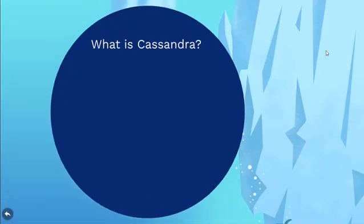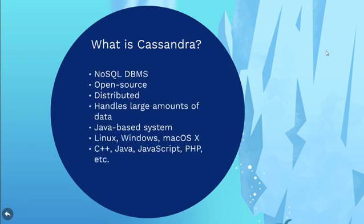Let us now see what exactly is Apache Cassandra. Cassandra is basically a free and open-source distributed wide-column store NoSQL database management system designed to handle large amounts of data across many commodity servers.